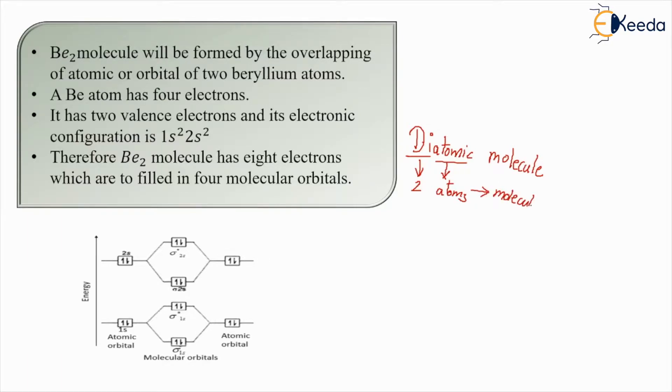it is known as a diatomic molecule. Over here the first example we have taken is of BE2 which is beryllium. That means one beryllium plus another beryllium came together to give us BE2.